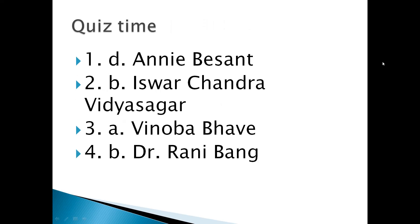Now quiz time. Number 1: who was elected the first woman president of the Indian National Congress? Annie Besant. Number 2: who introduced the practice of widow remarriage among Hindus? Ishwar Chandra Vidyasagar. Number 3: a social reformer well known for the Bhoodan Yajna Movement — Vinoba Bhave. Number 4: a gynecologist by profession, this lady provides free medicines in one of the most underdeveloped tribal villages — Dr. Rani Bang. Thank you, children.